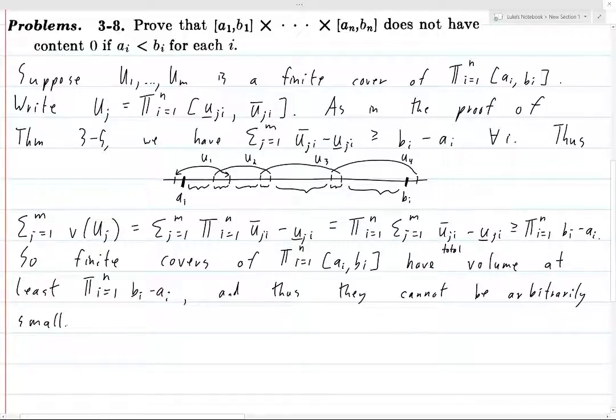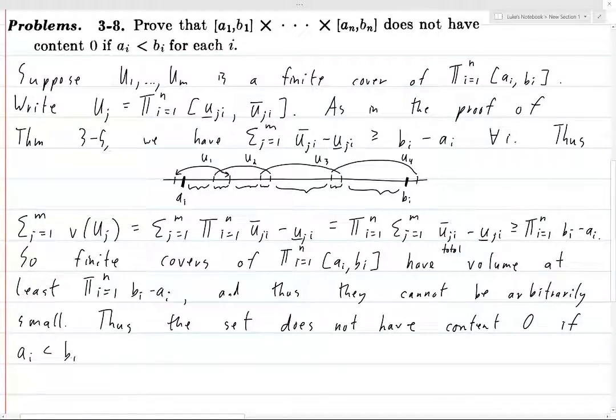And so if you choose some epsilon, so for example, if you want to make this maybe a little more neat, you could say if you choose any epsilon which is between 0 and multiplication from i equals 1 to n of bi minus ai, then there is no finite cover of this set which has volume less than epsilon. And thus, the set does not have content 0 if ai is strictly less than bi for all i. Because if ai is strictly less than bi for all i, then this multiplication from 1 to n of bi minus ai is going to be strictly positive.